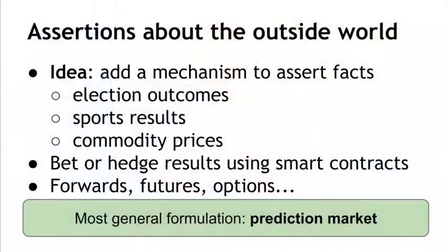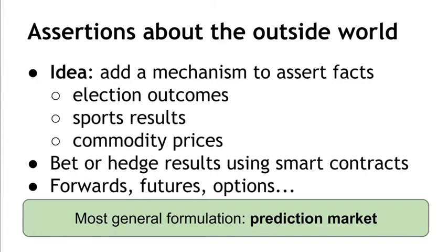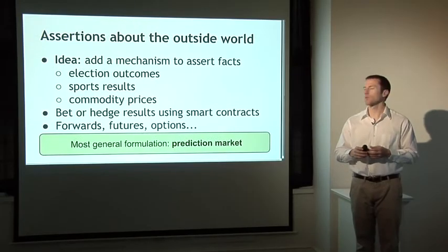So how can we make assertions about the outside world within Bitcoin? The idea is we'd like to add a mechanism to assert facts about the real world into Bitcoin, and those facts might be who won an election, who won a sports match, what the price of some commodity is on a certain day, any kind of real-world data that is of importance to a lot of people.